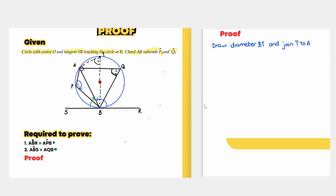We're going to start with the green one, which will lead us to the blue one. We want to prove angle Q1 equals angle ABS. We know that angle TBS equals 90 degrees. The reason is tangent perpendicular to radius.